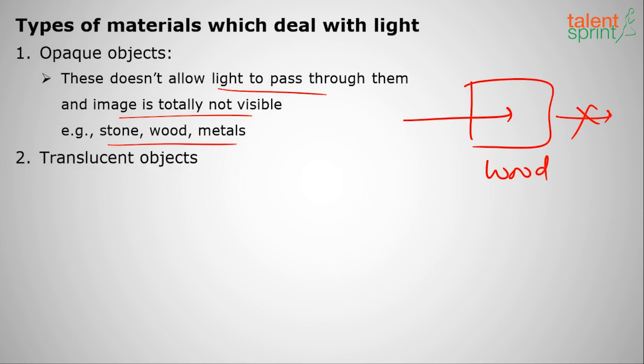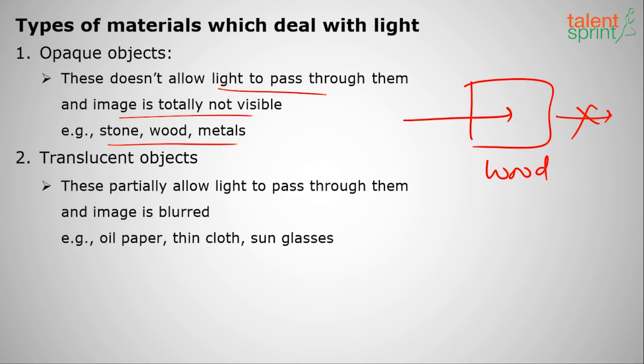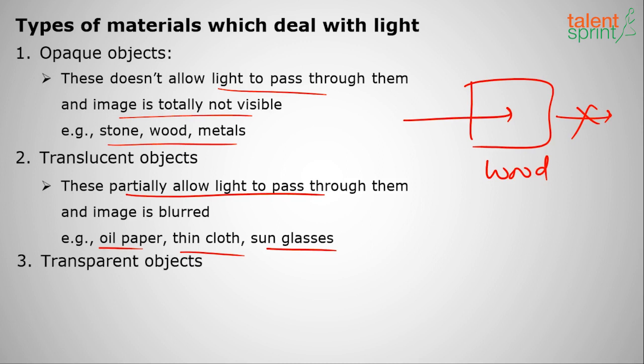Translucent objects allow light to pass through them only partially, so the image is blurred. Examples include oil paper, thin cloth, and sunglasses — they allow light to pass partially, so objects are partially visible.